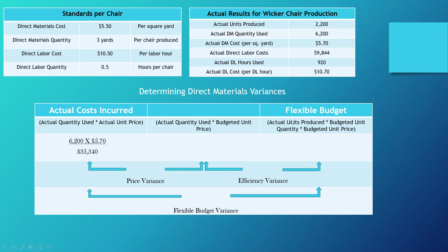My goal is to isolate how much of the flex budget variance is attributable to the change in price of materials versus efficiency — how much wicker we actually had to use. To do that, I need the no-name column: actual quantity used times standard budgeted unit price. We used 6,200 yards at our budgeted price of $5.50, which gives $34,100. Then for the flex budget amount — what should have happened if we hit all our standards — we take 2,200 actual units times 3 yards times $5.50, which equals $36,300.